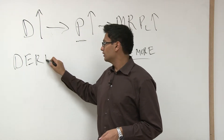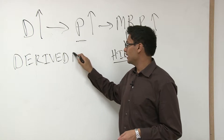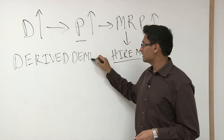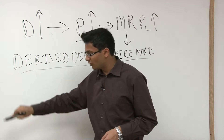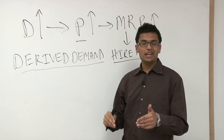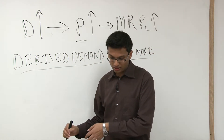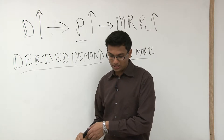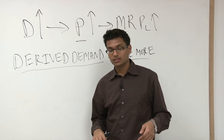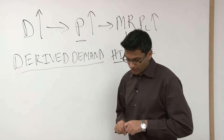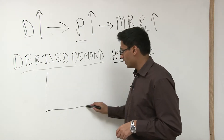Derived demand basically says that an input like labor can be derived from the goods' demand. This concept might show up on a test, so understand it well.